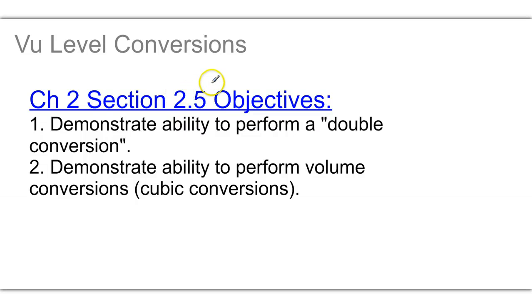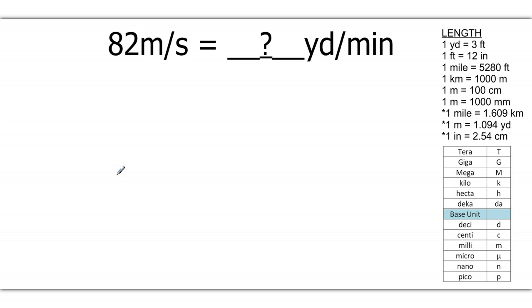Chapter 2, Section 2.5 is going to be the unit level conversions. There are two types: double conversions and volume conversions. The first is going to be an example of a double conversion.